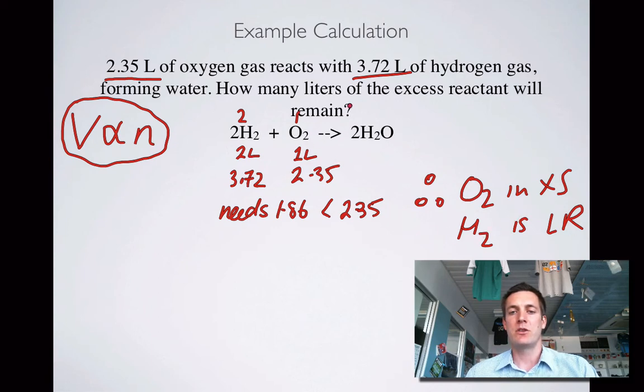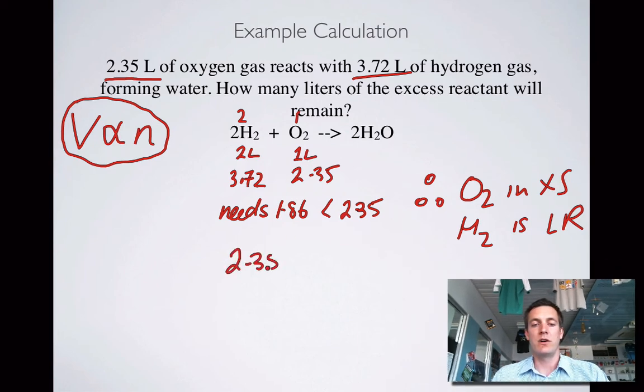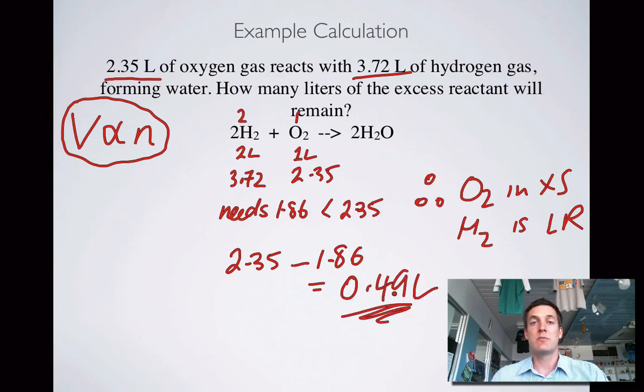Here's our limiting reagent. We're going to base the amount of product on that, except we don't have to find the product in this question. We're being asked to find how much excess is left over. This is the excess. This needs 1.86 of this to react, so we're going to have 2.35 minus 1.86, and that is equal to 0.49 liters. So that's a gases problem, but we don't have to use PV equals nRT there because everything's done under the same conditions, so we say that the mole ratio is like a volume ratio.